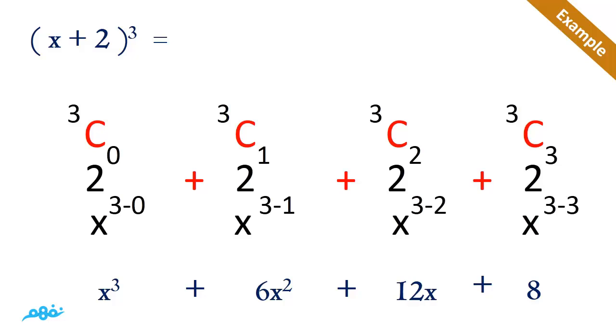The first term will be 3C0. Here you can see that the r of the combinatorics and the exponents of the second term is ascending: 0, 1, 2, and 3, while the exponent of the first term is descending: 3, 2, 1, and 0. We multiply the C by the b by the a.